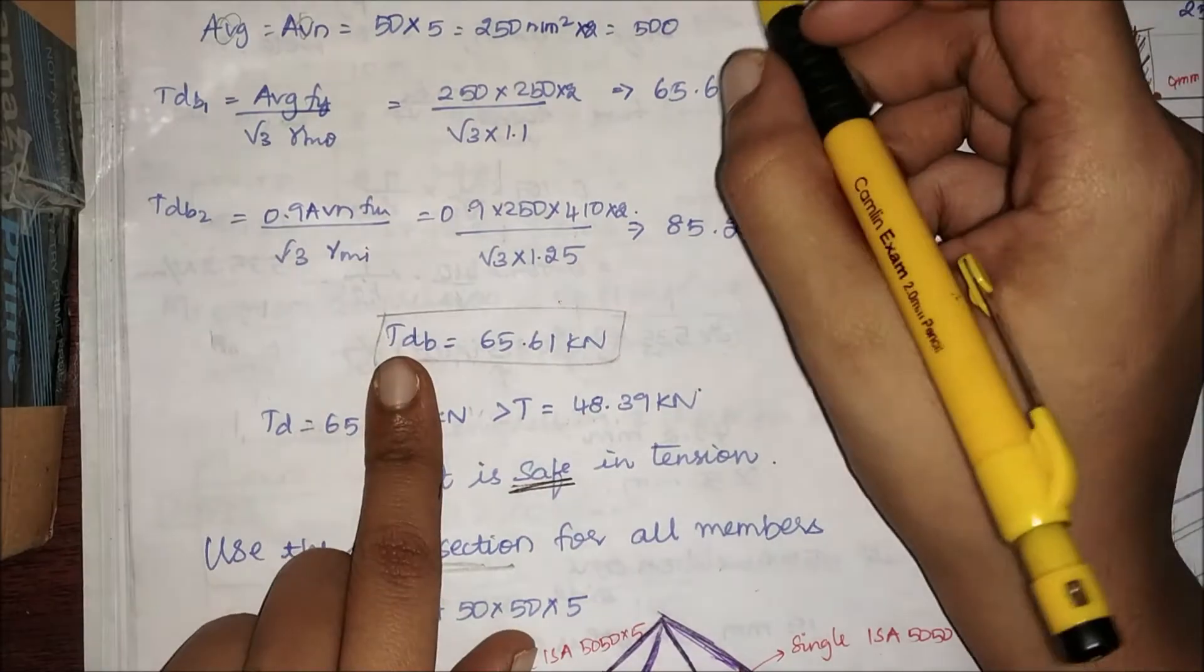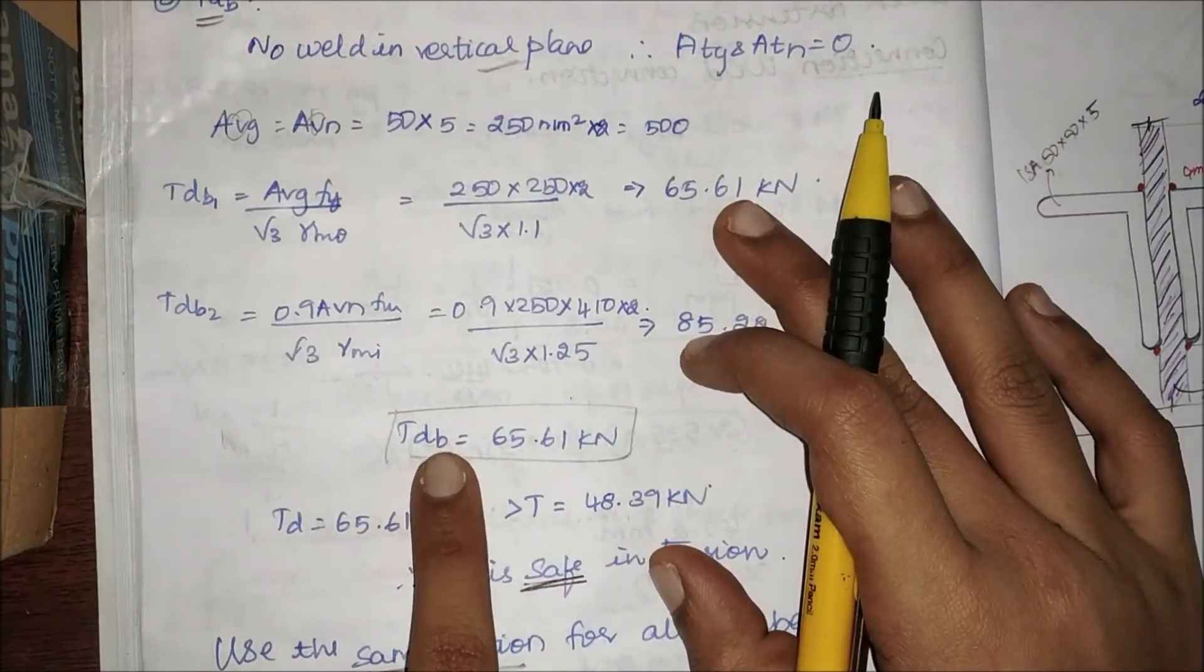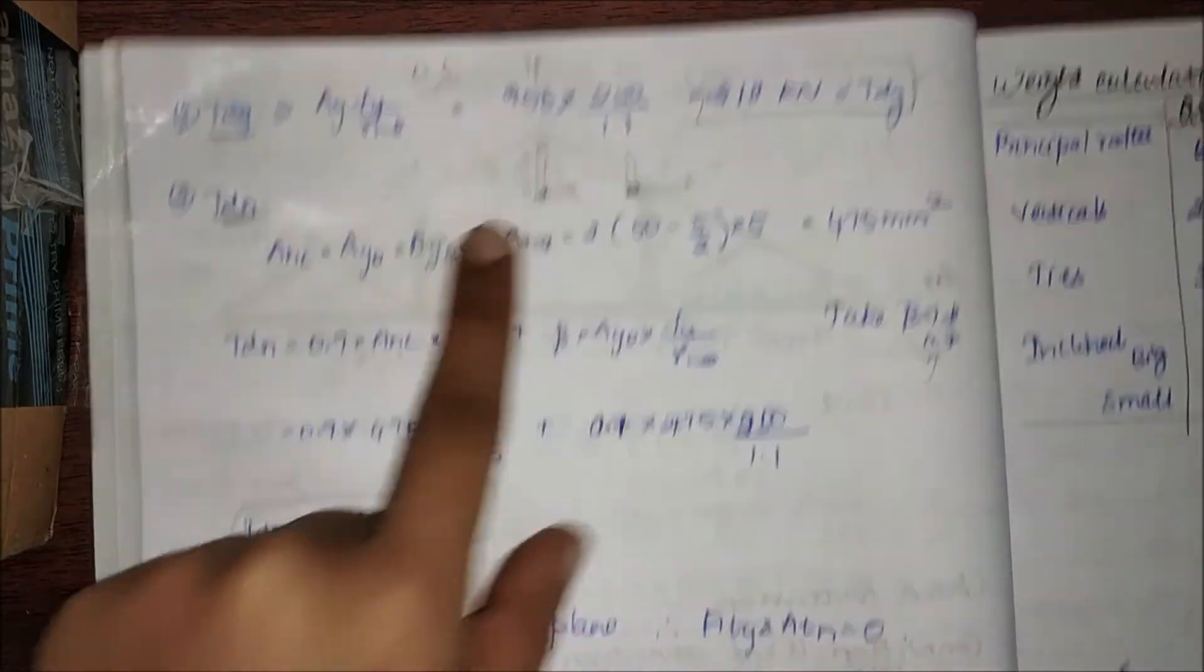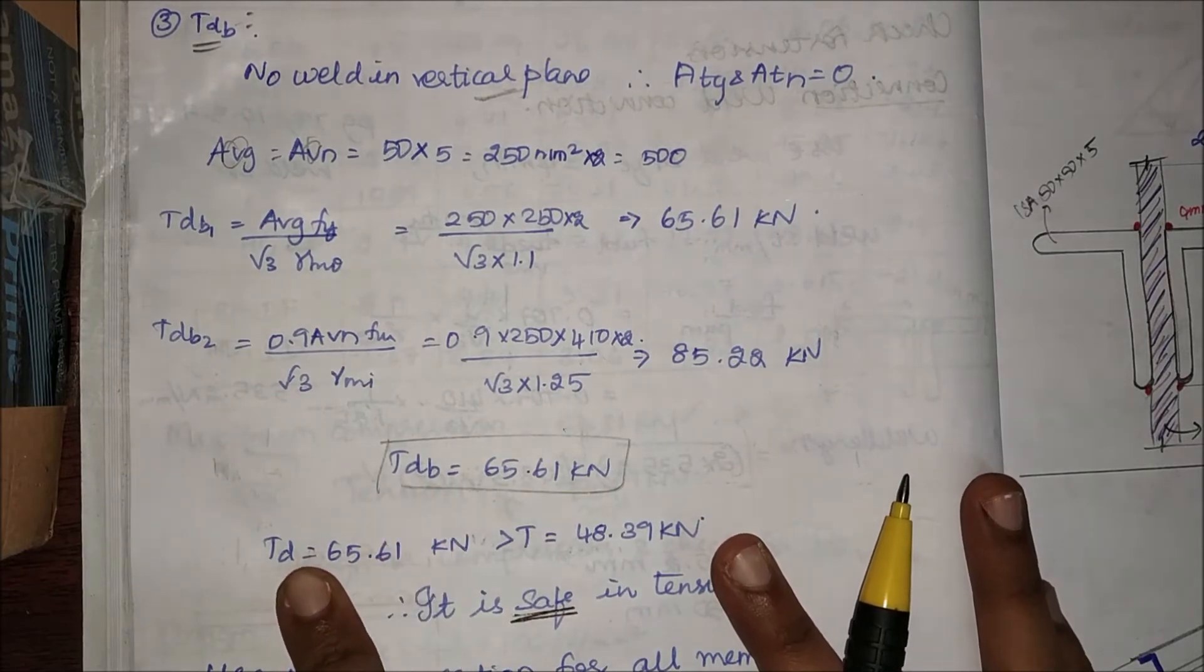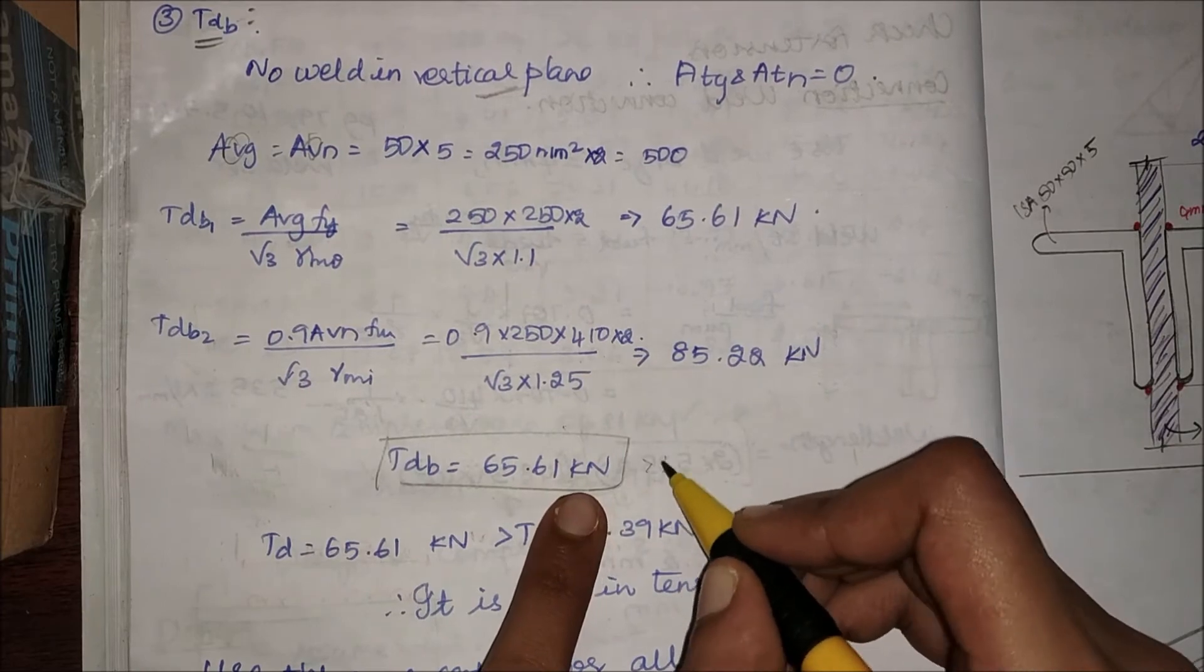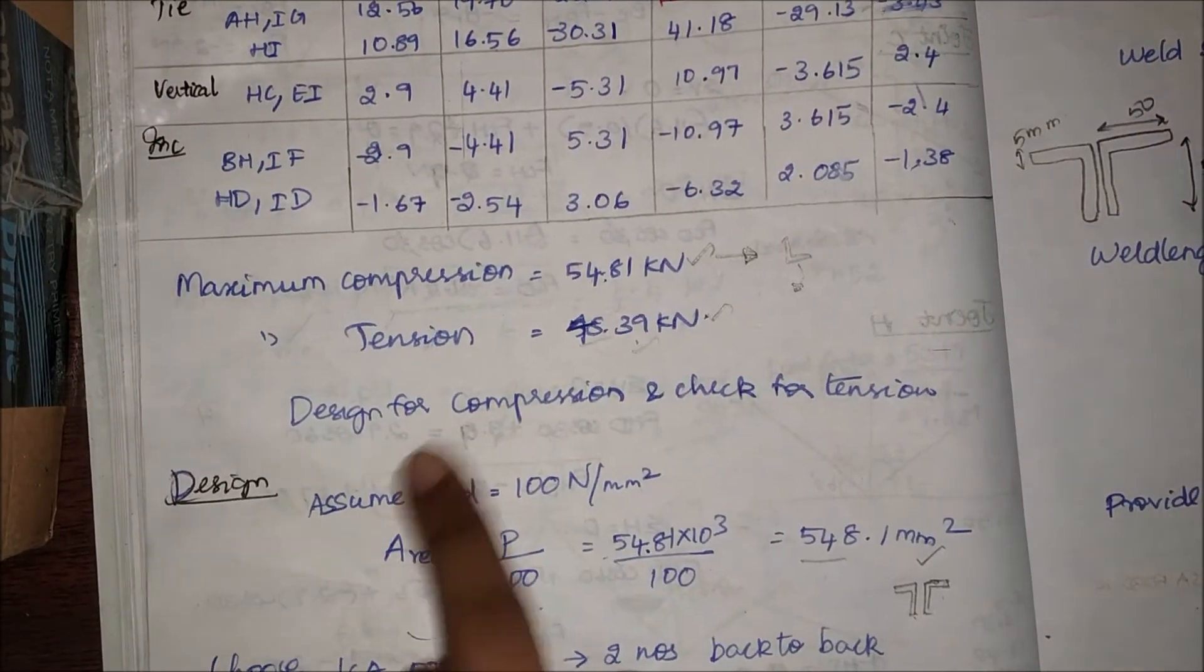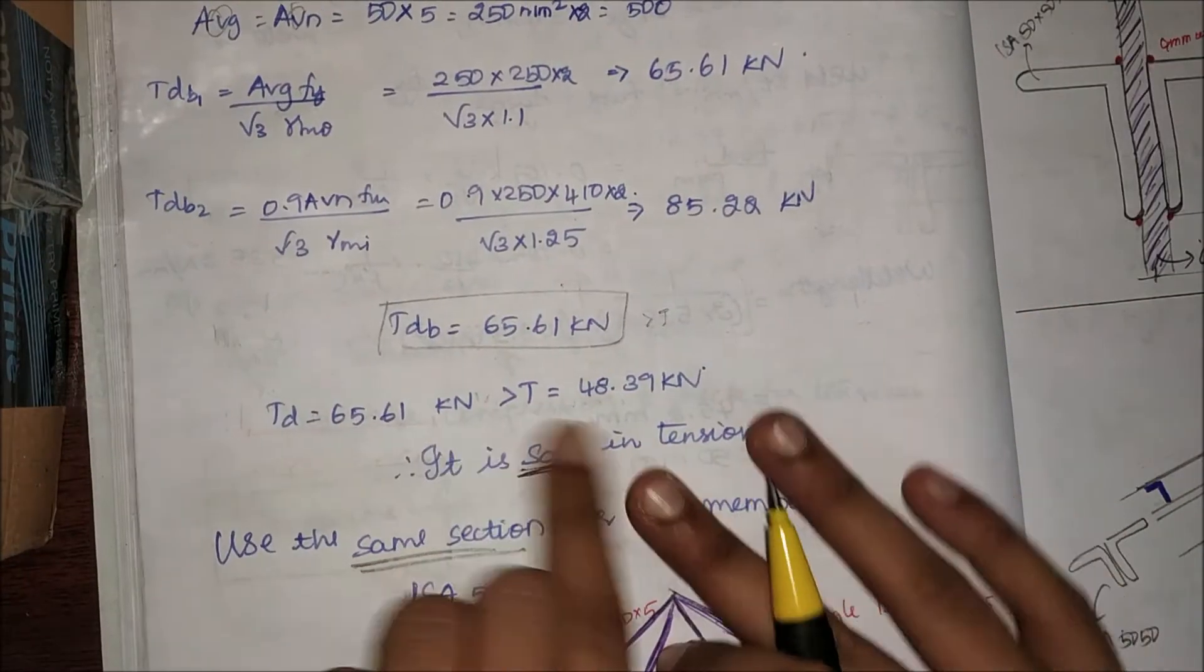From the formula for both things, I have got Tdb equal to 65.61 kN. You can see that since I haven't provided any weld in the vertical plane, Tdb is drastically less than Tdn and Tdg. This is the lesser of all three, therefore Tdb is my design tensile strength. I have to make sure this is greater than the tension acting on the structure. 48.39 kN is my maximum tension, which is lesser than my design tensile strength, therefore it is safe in tension.